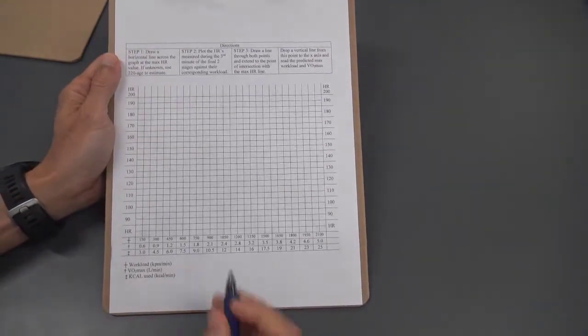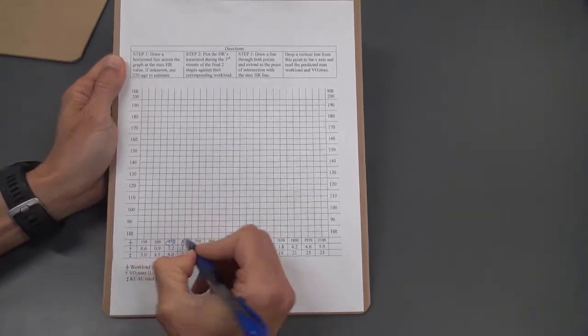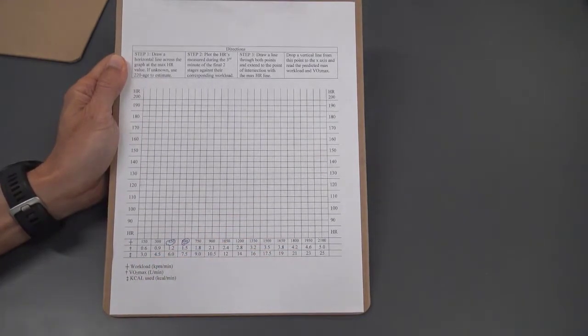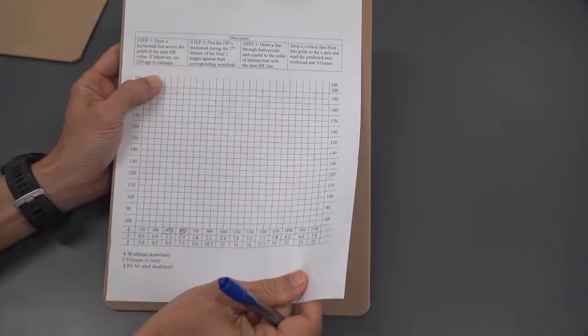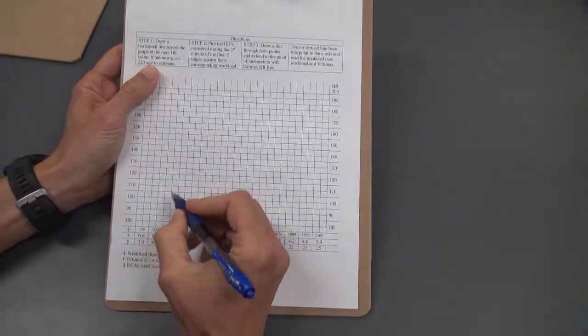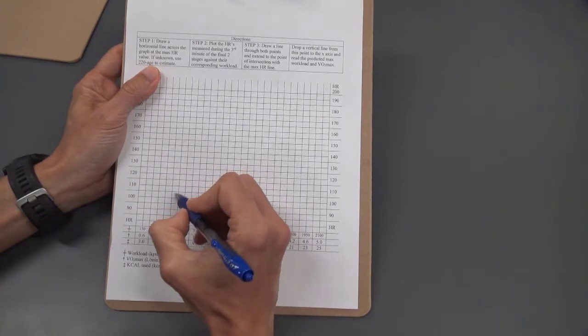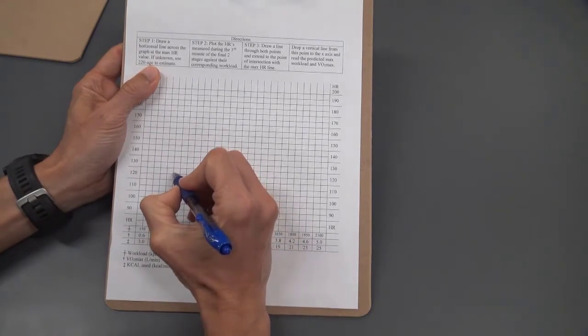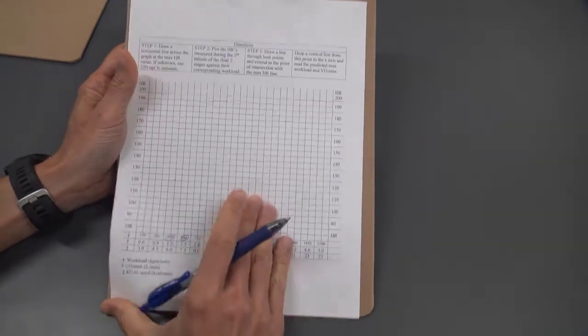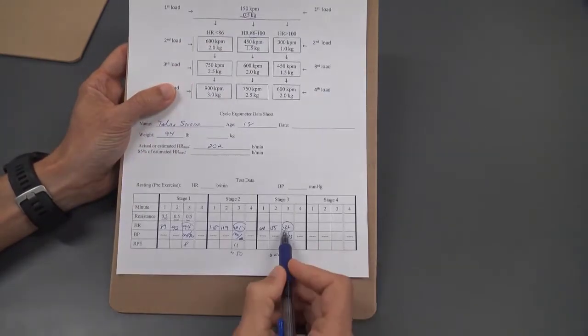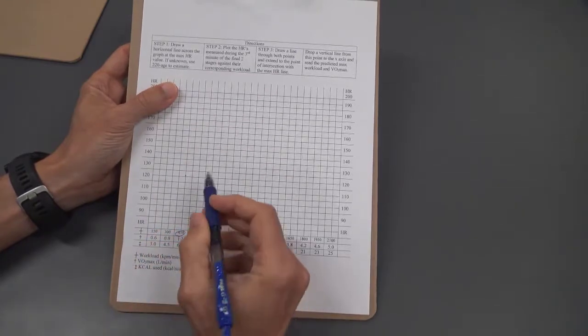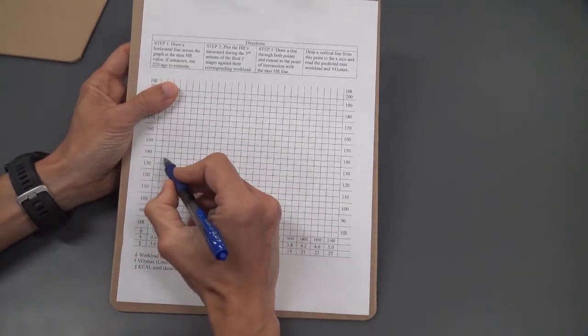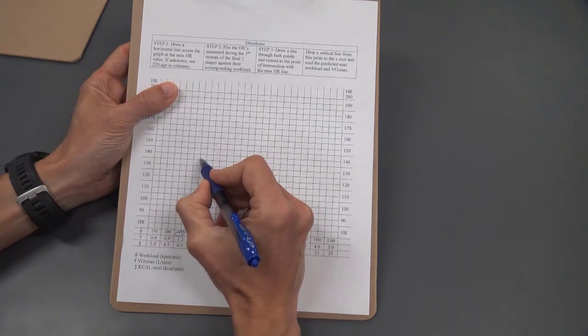We then need to find these two workloads on our graph, and we need to mark them so that we're making sure we're plotting heart rates on the appropriate workloads. Our stage two steady state heart rate is 121 beats per minute, so we'll follow the line straight up from the 450 workload to the 120 beat mark, and then slightly above that, we'll make our point. Our stage three steady state heart rate was 137 beats per minute. We do the same thing, find the 600 kilogram meter per minute workload, follow the line up to the 135 beat mark, and just slightly above that, we'll make our point.